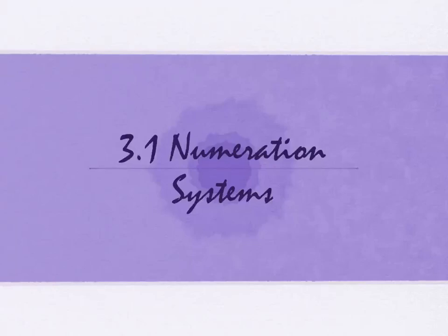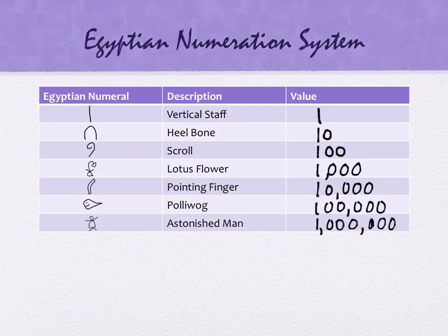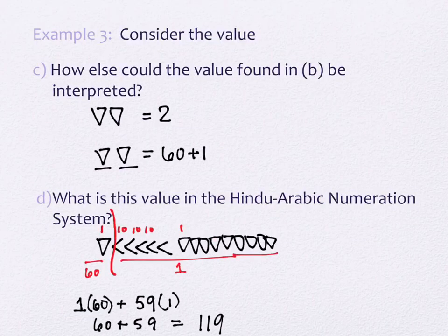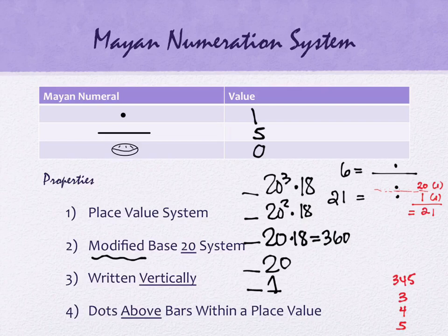We're in section 3.1. We had just left off talking about the Mayans and their enumeration system, so let's pick back up. We had encountered a system written top to bottom or bottom to top. The largest value is at the top, the smallest value is at the bottom. Dots are 1, horizontal lines are 5, and we have this shell shape that's a 0. It's a modified base 20 system, so they have place values of base 20, kind of.